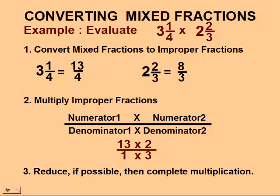Now we can complete our multiplication. So 13 times 2 gives us 26 as our new numerator. And 1 times 3 gives us 3 as our new denominator. Our answer is 26 thirds. So we can write this as a mixed fraction of 8 and 2 thirds, the same answer we got using our model.